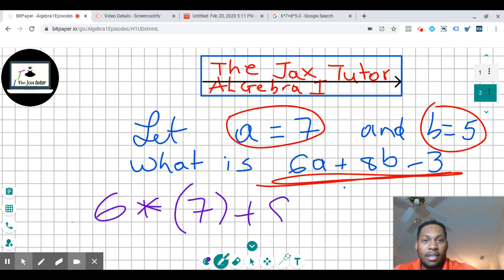Plus 8b, 8b is 5, I'll put 5 here, minus 3, and minus 3.